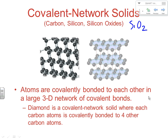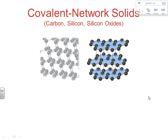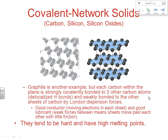Diamond is an incredibly hard substance because of that 3D network covalent bonding. Graphite — another way to put carbon together — is also covalently bonded in multiple directions, but you don't have quite as strong of an arrangement. Within the graphite plate, the carbon atoms have strong covalent bonding between them, so the plates themselves are very strongly held together, but in between the plates you have relatively weaker bonding, which is why these plates can move against each other with very little friction.